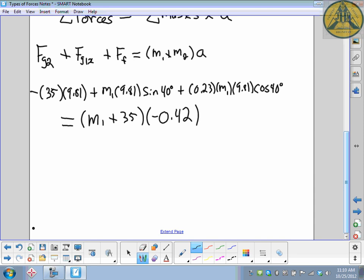All right, now we number crunch and be careful. 35 times 9.81, this will be negative 343.35 plus, so 9.81 sine 40, this will be 6.31 M1, plus 0.23 times 9.81 times cosine 40, 1.73 M1. That has to equal, now we expand the brackets on the other side, negative 0.42 M1 minus 35 times the 0.42, 14.7.